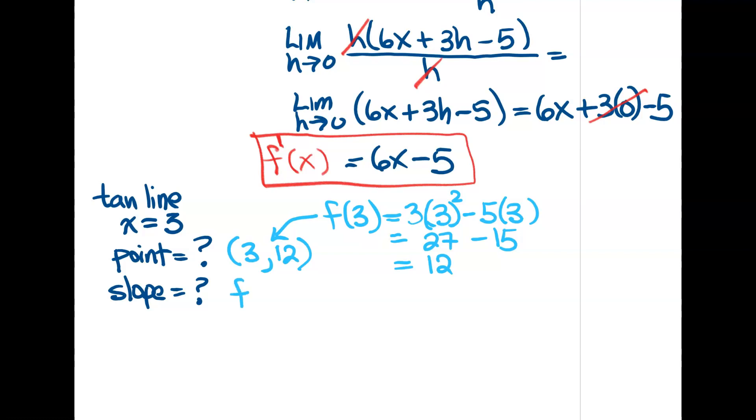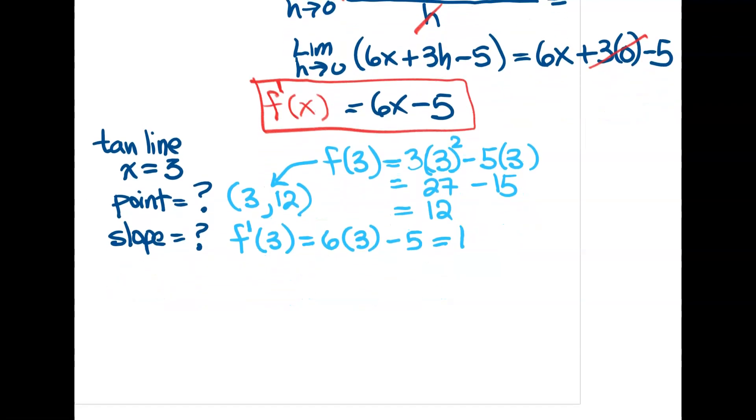So the slope is going to be the derivative at 3, because that's where I want the slope at, is at the x value of 3. So I'm going to plug 3 into the derivative for this. 6 times 3 minus 5. So I'm going to end up with an 18 minus a 5 and a 13. All right, so this is my slope. This is my m. So I have my slope. I have my point. And now you get to choose what way you want to get the tangent line.